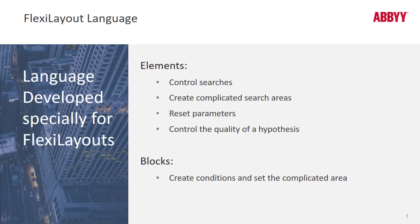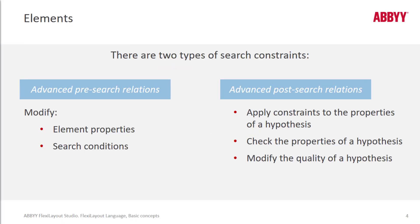This language was developed specifically for FlexiLayouts. There are two types of search constraints. You can think of these as scripting entry points: advanced pre-search relations and advanced post-search relations. There will be separate presentations on each one of these topics.